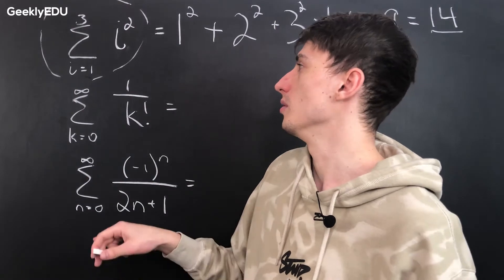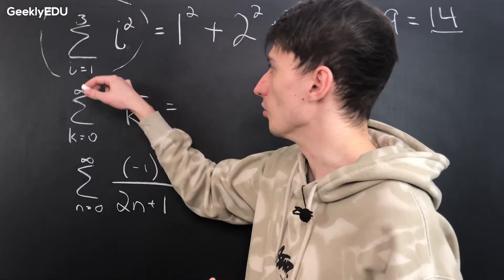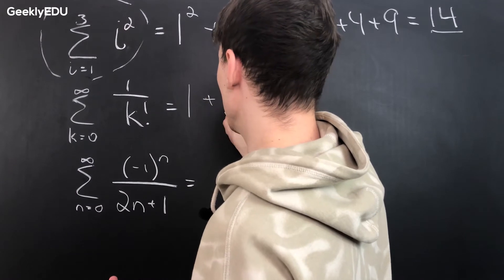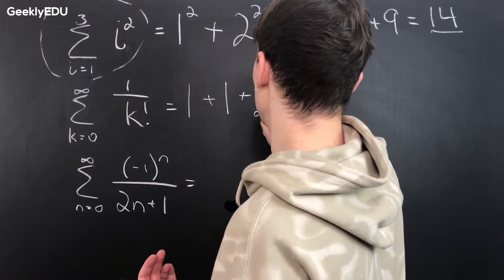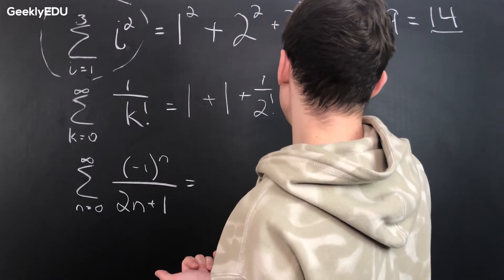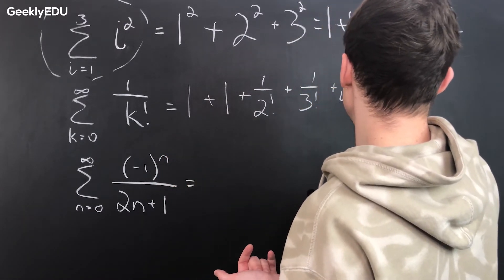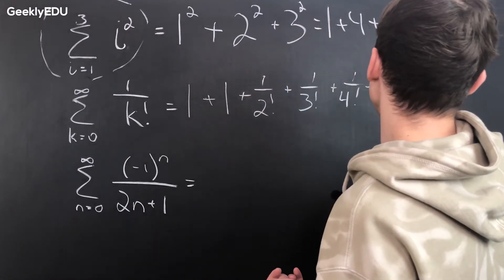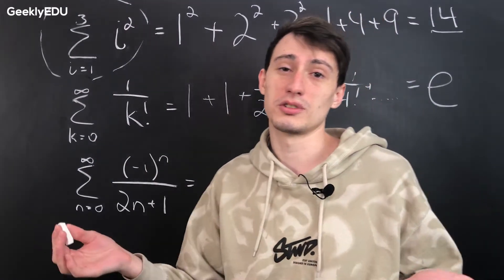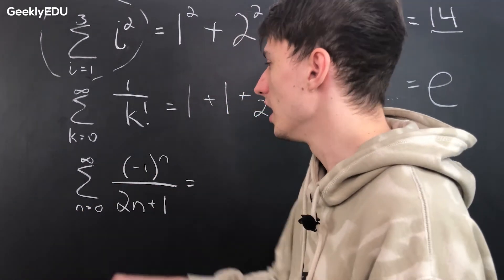Let's start with 0 this time, and go all the way up to infinity. So 1 over 0 factorial is 1, 1 over 1 factorial is also 1, 1 over 2 factorial is just 1/2, the next one is 1 over 3 factorial which is 1/6 because 3 times 2 times 1 is 6, then 1 over 4 factorial, and we just keep doing this forever. You might be surprised to find out this is actually equal to e — Euler's number. This is one of the definitions for the number e, which is pretty crazy.